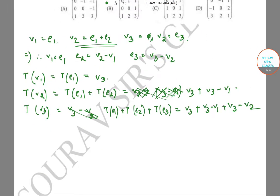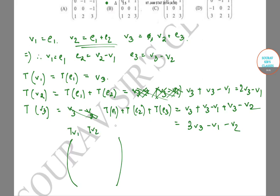So T(v3) = v3 + (v3 − v1) + (v3 − v2) = 3v3 − v1 − v2. The resulting matrix with T(v1), T(v2), T(v3) expressed in terms of v1, v2, v3 has columns: T(v1) = (0,0,1), T(v2) = (−1,0,2), T(v3) = (−1,−1,3). So A is the correct answer.